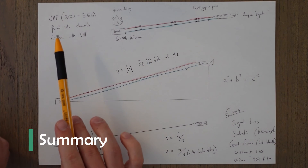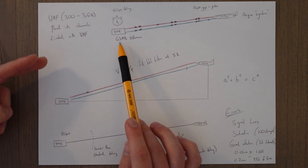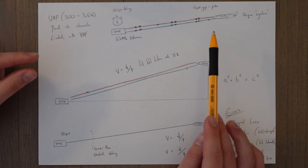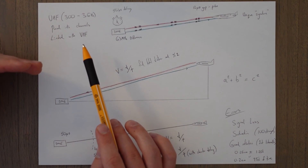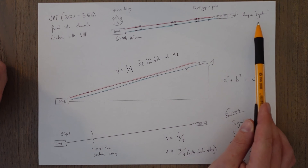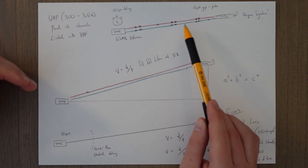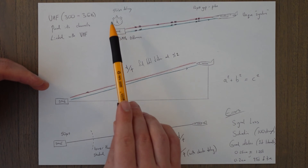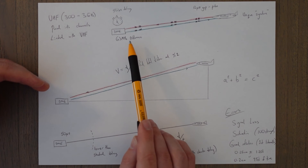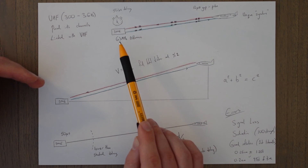To summarize: DME uses the ultra high frequency band from 300 megahertz to 3 gigahertz. It uses two frequencies, one sent out and one received by the aircraft, separated by 63 megahertz. They're paired into channels linked to VHF frequencies and beacons, and the aircraft automatically tunes the channel associated with that VHF frequency. The aircraft sends out a unique signature of pulse pairs — the gap between each pulse is 12 microseconds, but the gap between pairs is unique to each aircraft — and sends this out to the DME station.